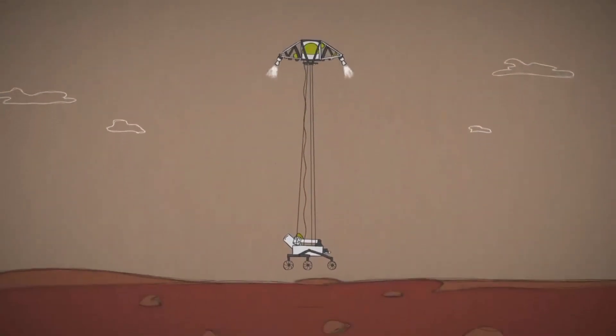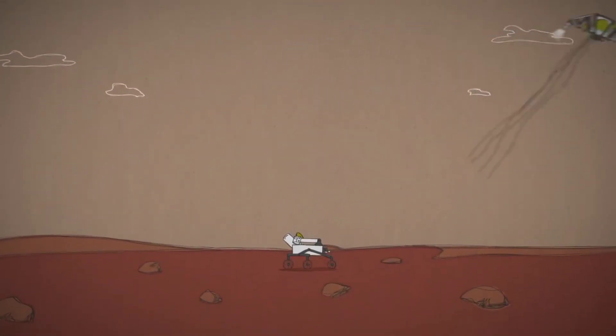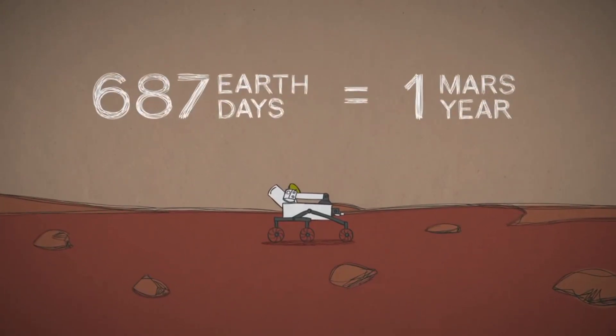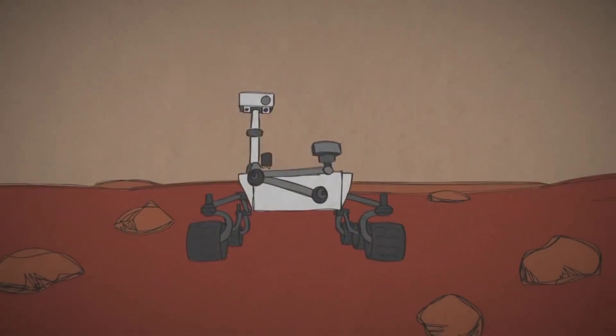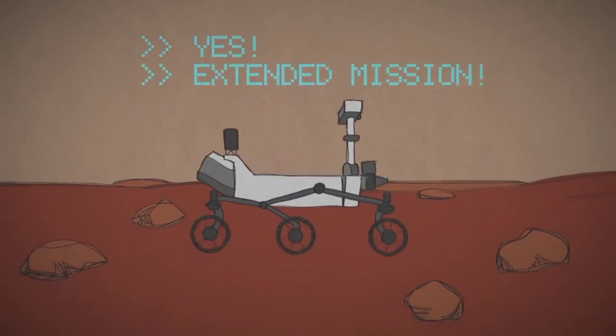When the Curiosity rover got to Mars, its mission was to explore Mars for at least 687 Earth days, one Mars year. But like our other long-lasting rovers, it hit its target and kept on rolling.